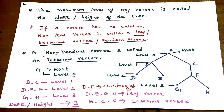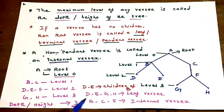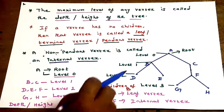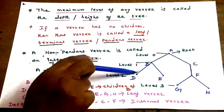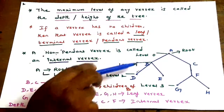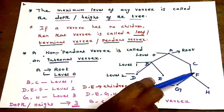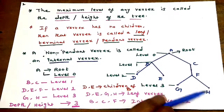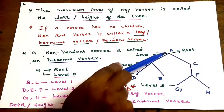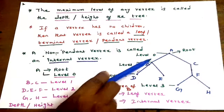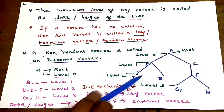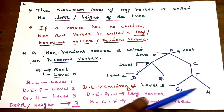The root node and non-leaf vertices are called internal vertices. The vertices B, C, D, E, F, G, H — excluding the leaf nodes — form the set of vertices in the tree. Internal vertices include A, B, C, and F.